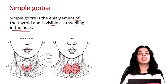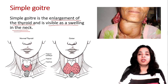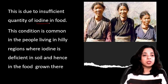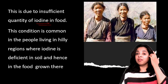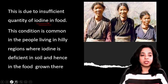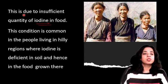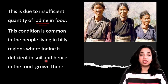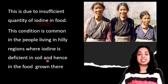This is visible from outside as a swelling. Simple goiter is due to an insufficient quantity of iodine in the food. This condition is very common in people living in hilly regions, where iodine is deficient in the soil, and hence whatever food grows there also has less iodine. So the intake of iodine through food is low in these regions.